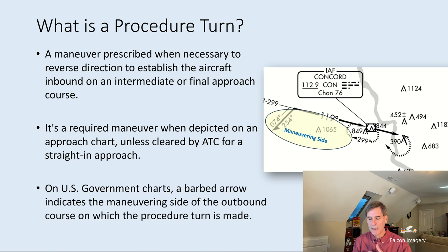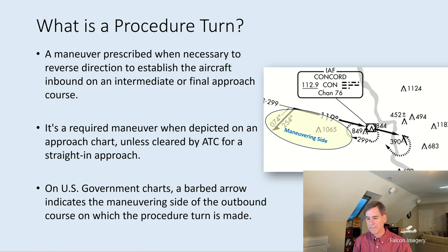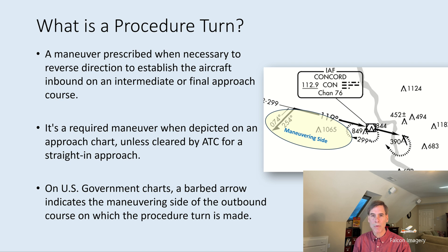On the US government charts — the FAA's instrument approach charts — you'll see a barbed arrow. This indicates the maneuvering side of the outbound course on which the procedure turn is made. You can turn either left or right depending on how far you want to be from the inbound initial approach fix, but you need to do it on the specified side, as shown in this example at the bottom side of the inbound course.